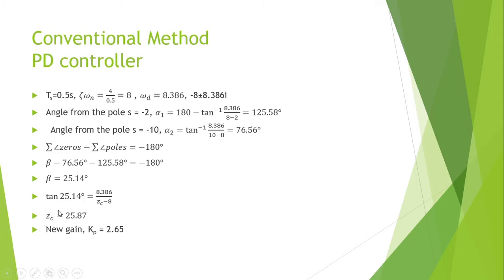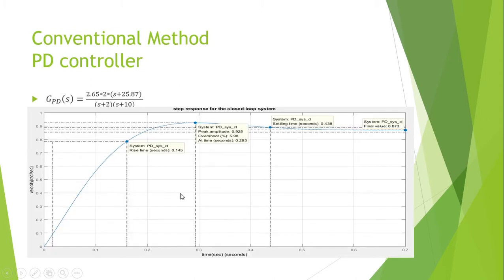Substituting the dominant poles into the new transfer function, we get the new gain equal to 2.65.